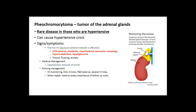A pheochromocytoma is a rare tumor of the adrenal glands that can cause a hypertensive crisis, seen in some hypertensive patients. Signs and symptoms are known as the five H's — because the medulla is affected: severe Hypertension, Headache, Hyperhidrosis (excessive sweating), Hypermetabolism, and Hyperglycemia. The way to combat it is to remove the tumor. The most dangerous symptom to monitor is hypertension, since unmanaged severe hypertension can lead to stroke or cardiac issues.